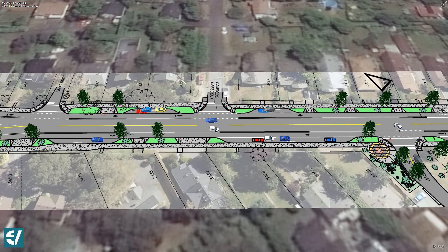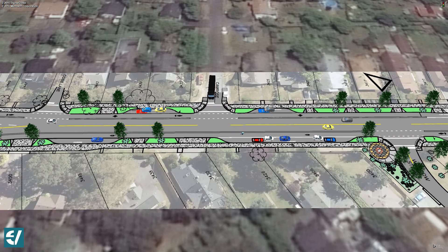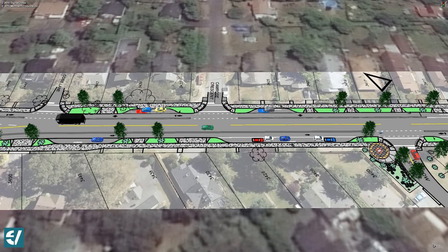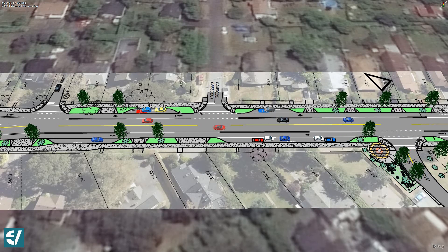Complete streets are designed for all users like pedestrians, cyclists, cars and transit. We see more and more corridors in North America being converted to complete streets. These types of streets typically reduce the traffic volume and speed that were present before the street was converted, but they also increase what we call friction among road users.